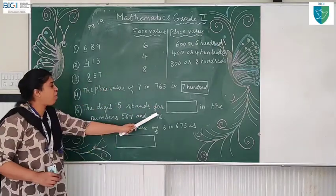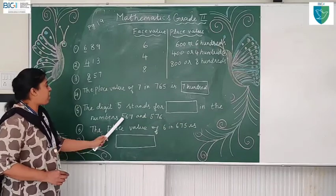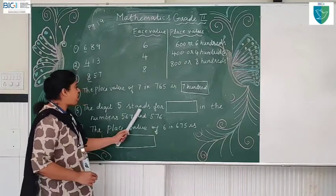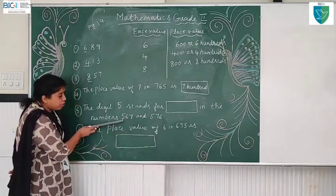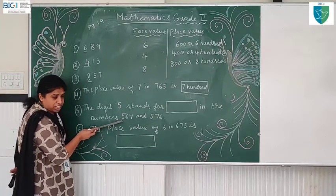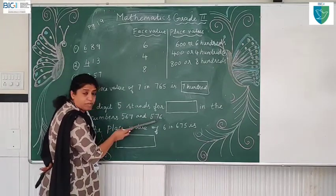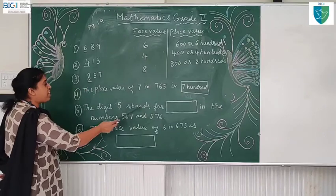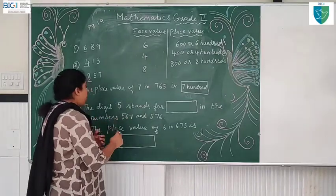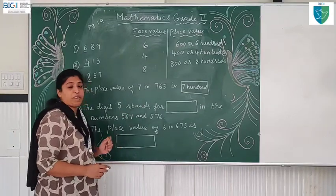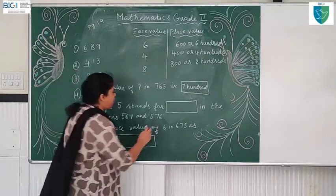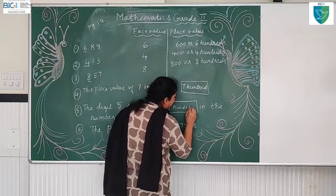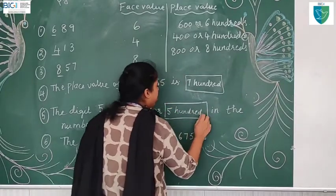The digit 5 stands for dash in the numbers 567 and 576. Where is 5 in the number 567? In the hundreds place. And in 576, where is 5? In the tens place. So what do you have to write here? The digit 5 stands for 500 in the number 567. Five hundreds — 500.